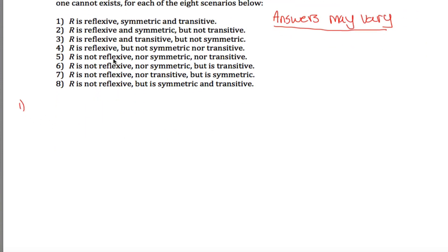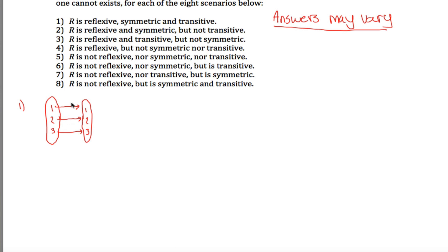For number one, I'm trying to draw something that's reflexive, symmetric, and transitive. I've got three elements — A, B, C. To make it reflexive, there better be an arrow from every element to itself. To make it symmetric, anytime I have an arrow, there better be an arrow going in the other direction. To be transitive, if there's an arrow from A to B and B to C, there must be an arrow from A to C. I think this would be a perfect example for number one.